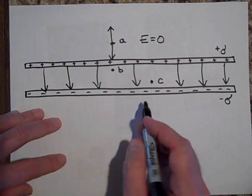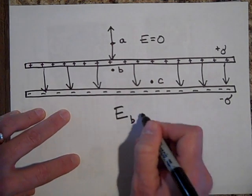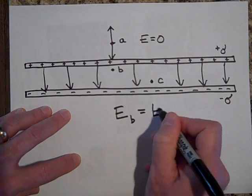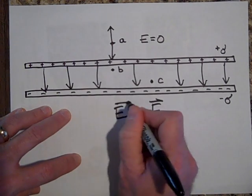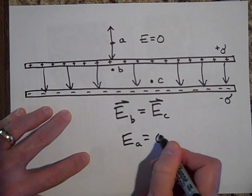So b and c have the same, the E at b is equal to the E at c, and the E at a is equal to zero.